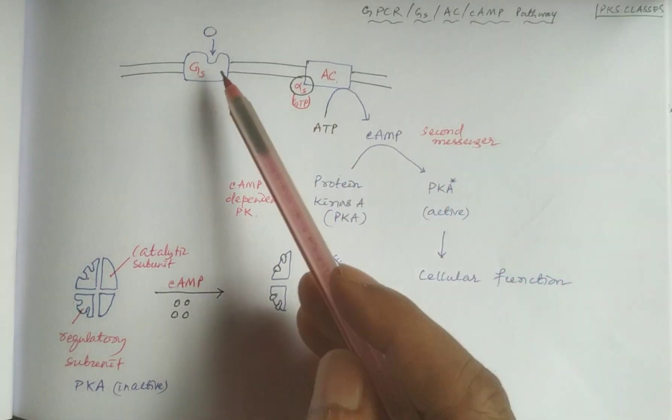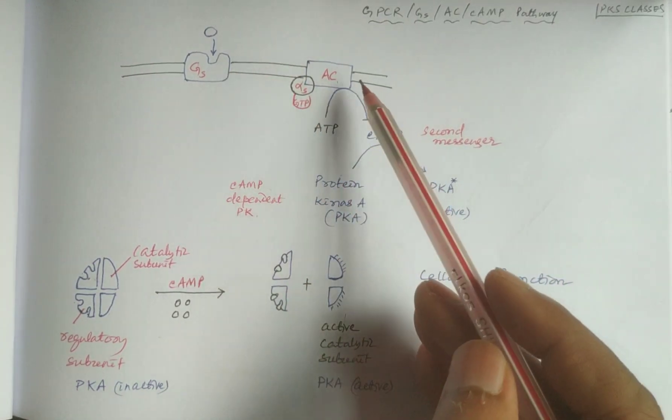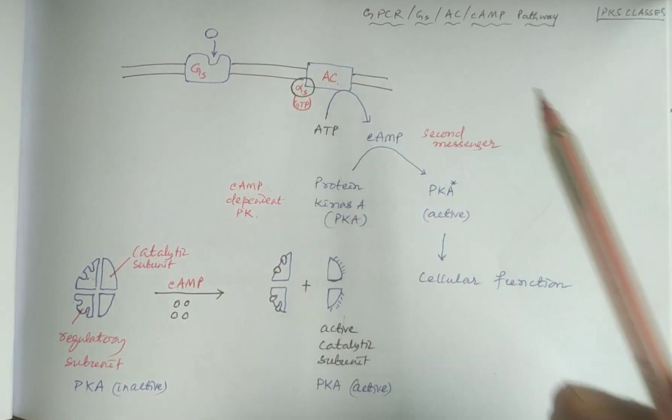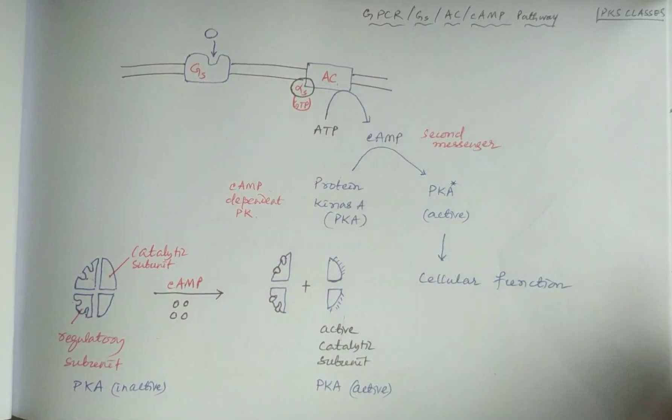In the case of Gi, adenylate cyclase is inhibited, so there will be no cyclic AMP formation.